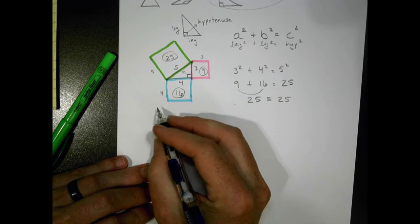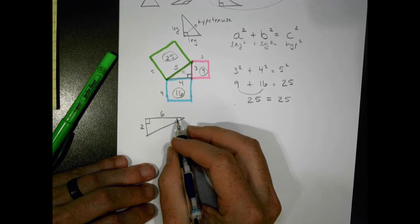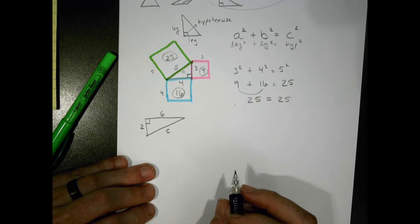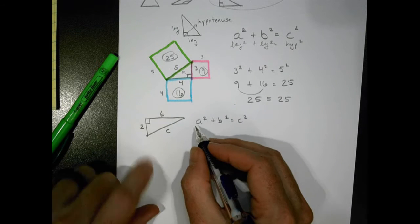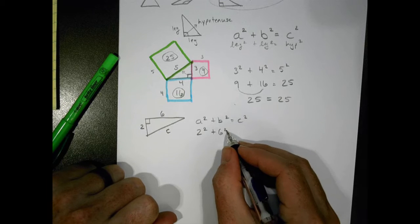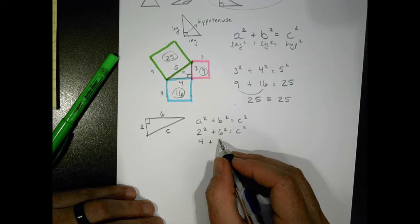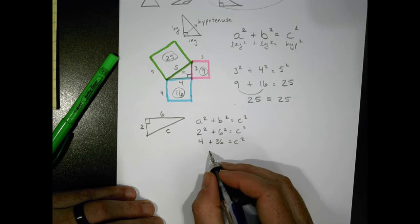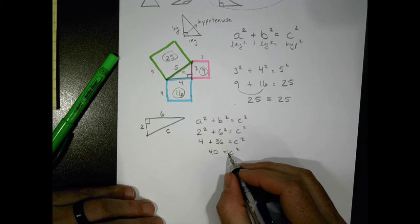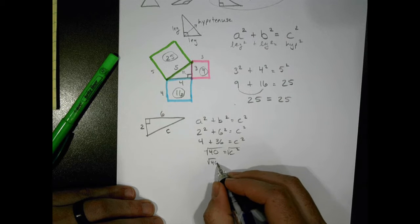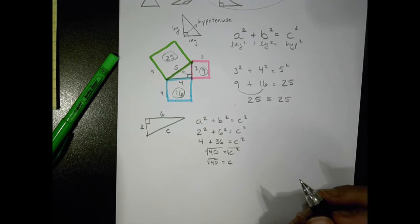Let's do some practice. Say I have a right triangle with a leg of two and a leg of six, and we don't know the c value. Using a squared plus b squared equals c squared: two squared plus six squared equals c squared. Two squared is four, six squared is 36, so four plus 36 equals c squared. 40 equals c squared, and taking the square root of both sides gives us the square root of 40 equals c, which is an acceptable answer.